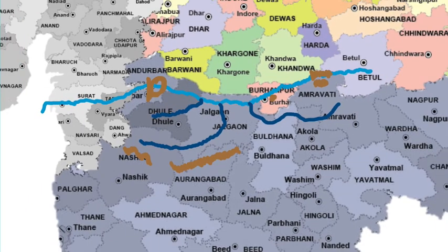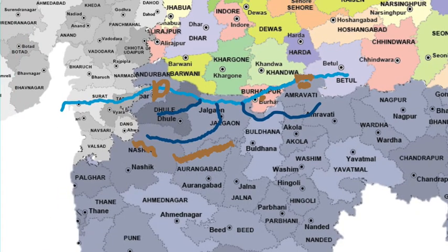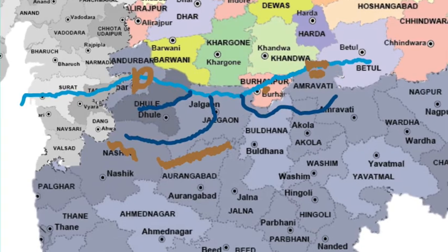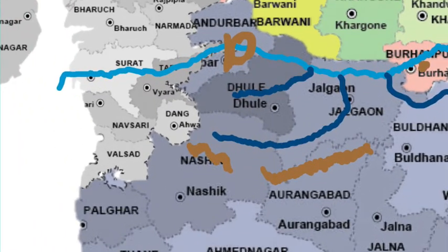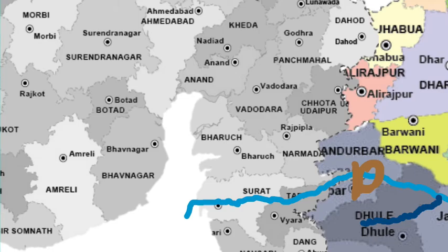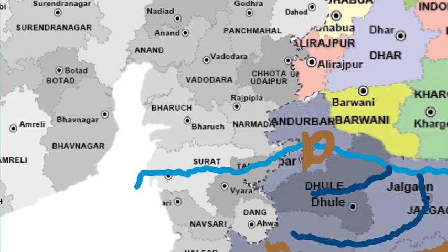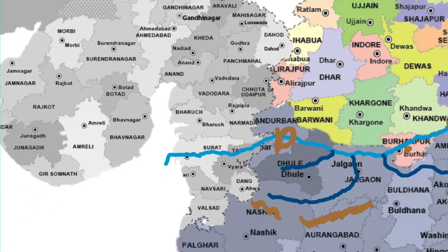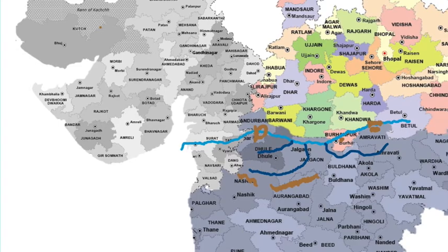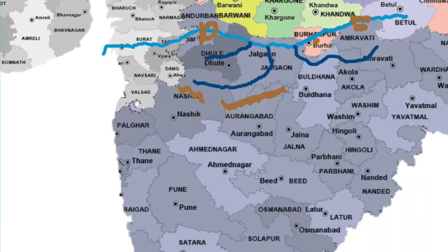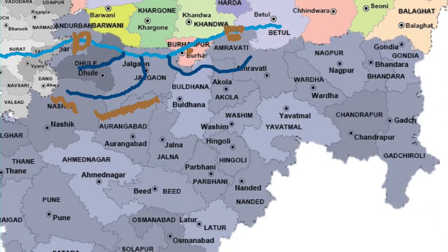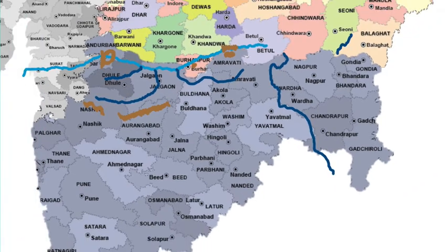In this video we comprehensively discussed the Tapi river — its origin, its flow, the districts it covers, and its ultimate entry into the state of Gujarat through the Tapi district and Surat. In our next videos we will be discussing the river Godavari along with its multiple tributaries and the economic benefits it offers. Thank you so much for watching and see you in the next video very soon.